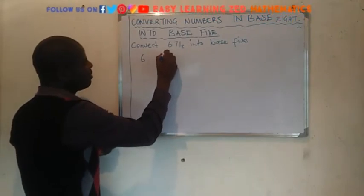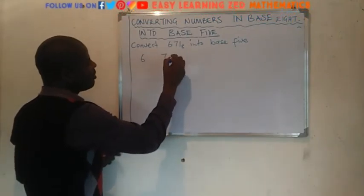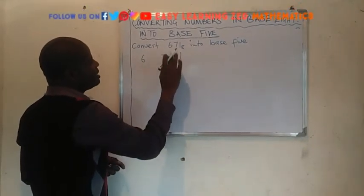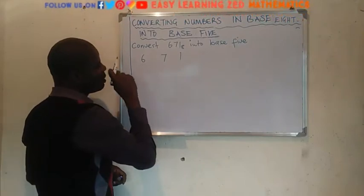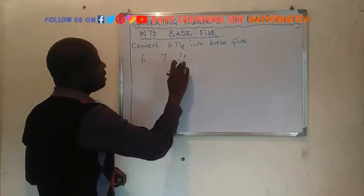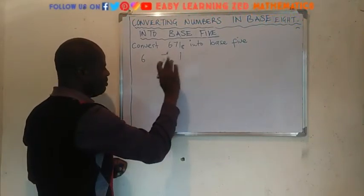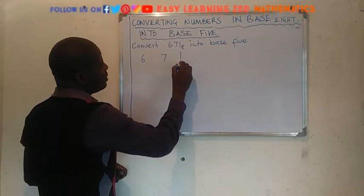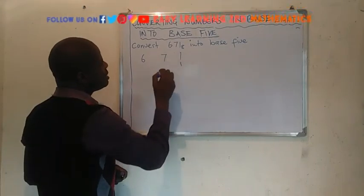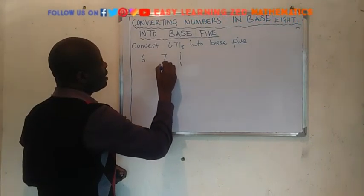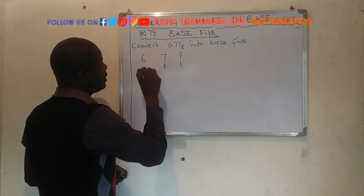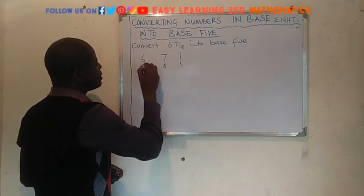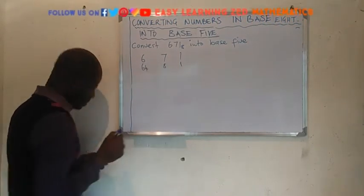I'll write this number here. Then 1 here. What is the place value of 1 in base 8? We are saying it has got 1's. Then 7 has the place value of 8's. And 6 has got the place value of 64's.